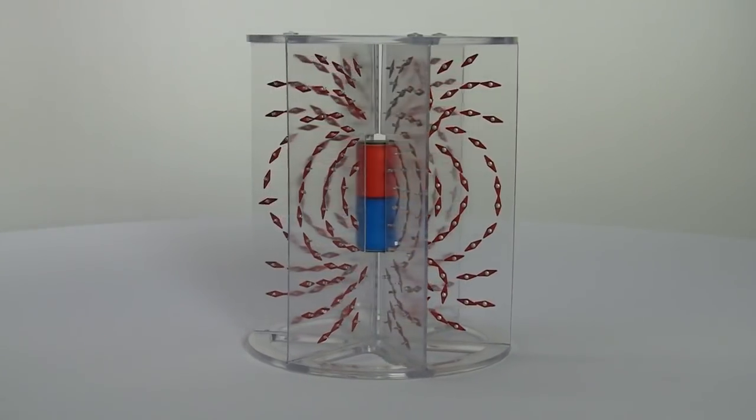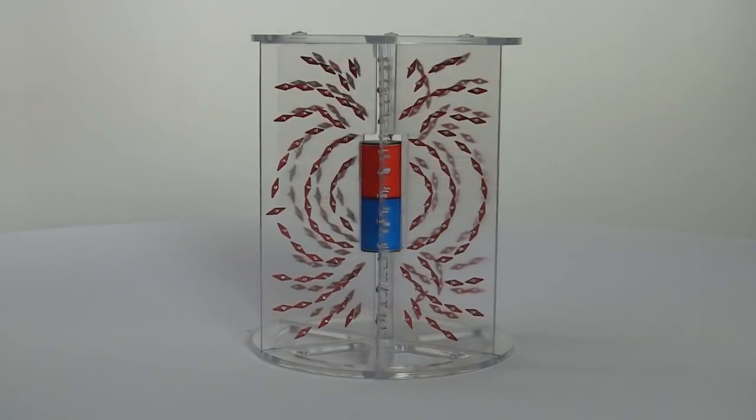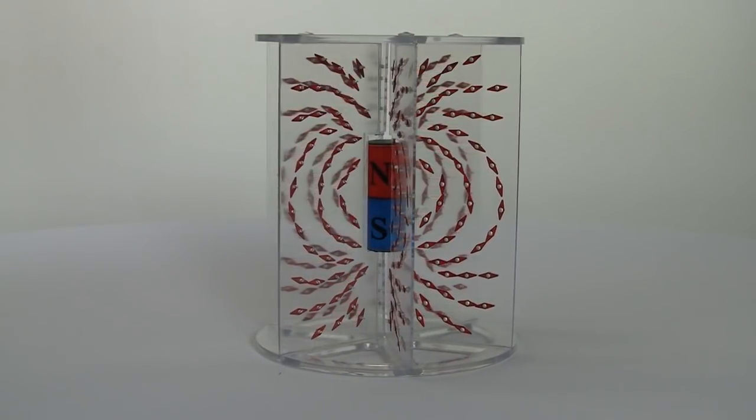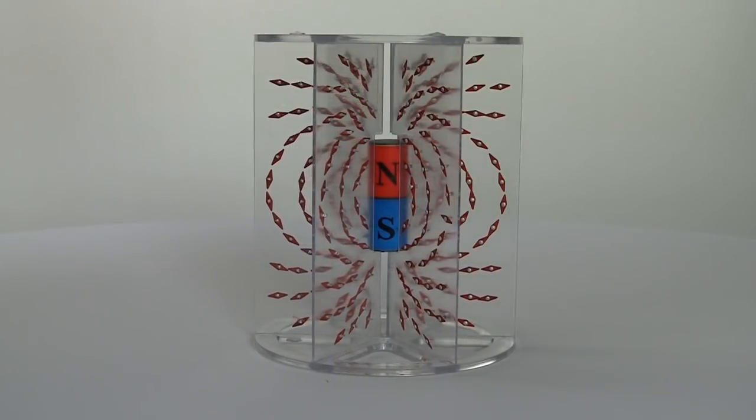The invisible is revealed. Each of the little compass needles are aligning themselves with the magnetic field that surrounds the bar magnet.